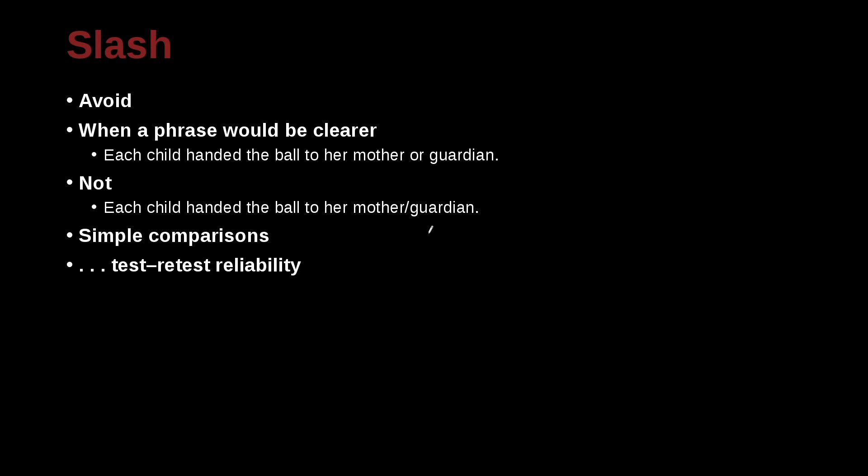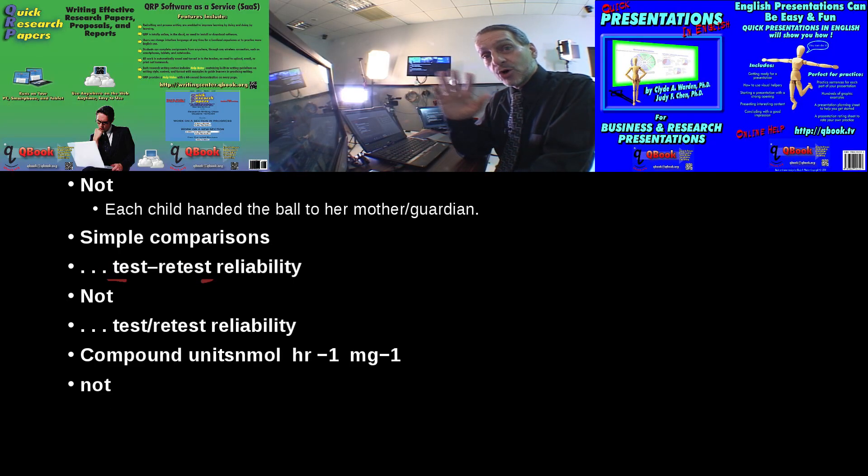Here's an example of when you would not use a slash. Test-retest reliability. Not test slash retest reliability. Because what we're saying is that this is a kind of phrase. This is an idea. It is a test-retest. It is not a test or retest or a combination of both or sometimes test, sometimes retest. It's not that way. It's very clear. It's a test, then a retest. And other kinds of compound measurements or ideas that we often use in science such as hours or a milligram. Well, that's a little bit overwhelming, isn't it? A lot of detail. But really not that many when you think about it.